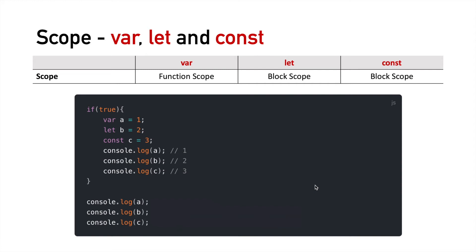Now coming outside of the if block, when we log the value of 'a', we get the output as 1. But if we try to log the value of 'b' declared using let, we get a ReferenceError that b is not defined. And if we try to log the value of 'c', we again get a ReferenceError that c is not defined. This is because b and c are declared inside the if block and their value is only accessible inside it, as they have block scope, whereas var is accessible outside the if block because var has functional scope.